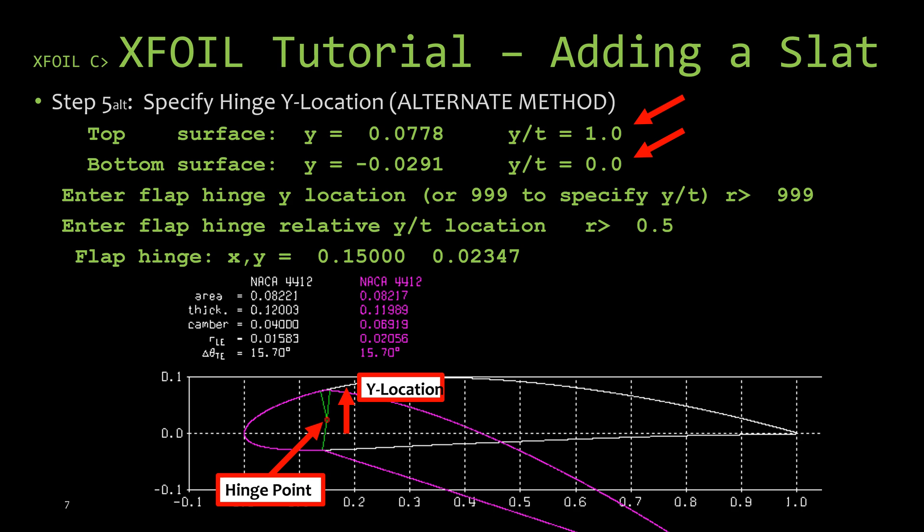Now remember, like the x location of the hinge point, X-foil is looking for the actual y location of the hinge point. So if you didn't want to use this alternate method and just specify the relative location using upper to lower surface locations, then make sure you're giving the actual y location of the hinge point.